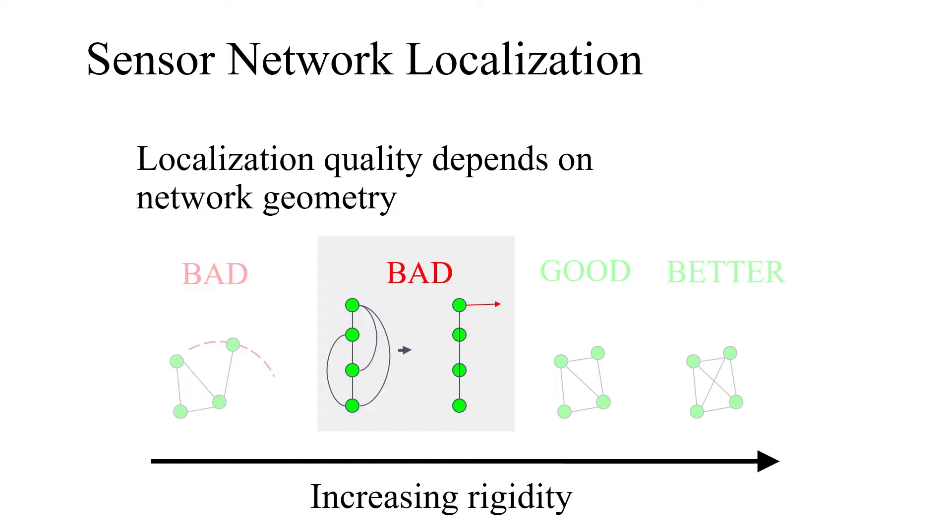Beyond the connectivity of nodes in the network, localization also depends on the spatial arrangement of the network. In the highlighted scenario, though all of the nodes are sufficiently connected, the arrangement of the nodes causes a large degree of localization uncertainty in the direction along the red arrow. As a general intuition, a preferable arrangement will have nodes spread out and well connected, causing the network to appear well triangulated.